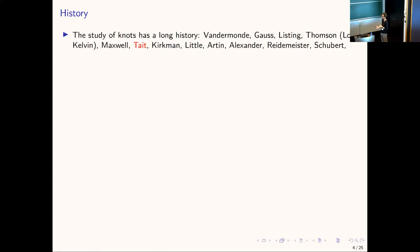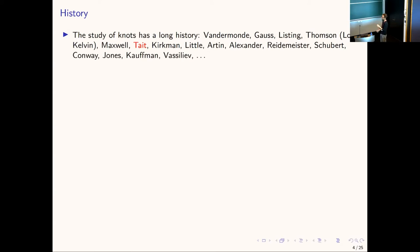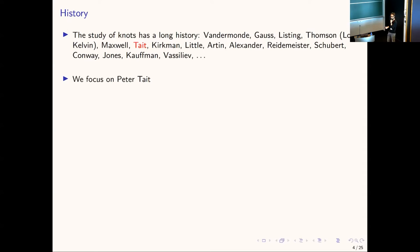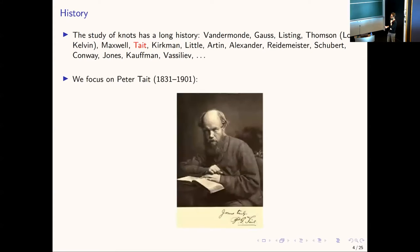Emil Artin came up with braid theory, which put knot theory on a solid theoretical framework — a revolutionary development. Alexander came up with the first polynomial knot invariant in 1928. Reidemeister established his moves, although it turns out these moves were actually anticipated by Maxwell. In a more modern setting, we have Conway, Vaughan Jones, and Kauffman.